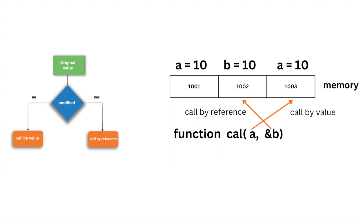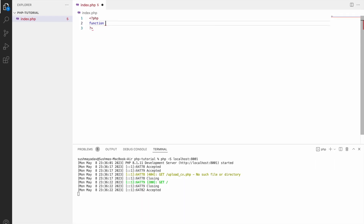As you can see in the image, variable A is being sent as call by value and variable B is being sent as call by reference. Variable A will be stored in a different memory location, whereas variable B will point to the memory location of the exact variable B.